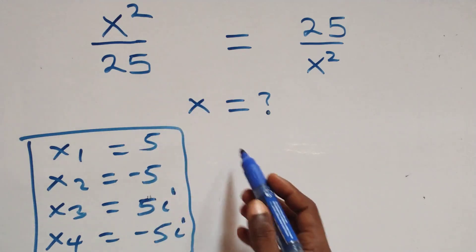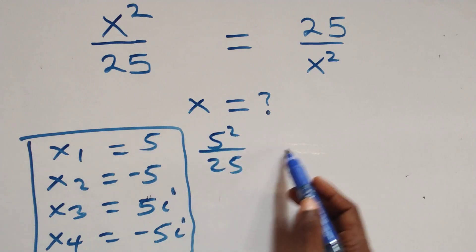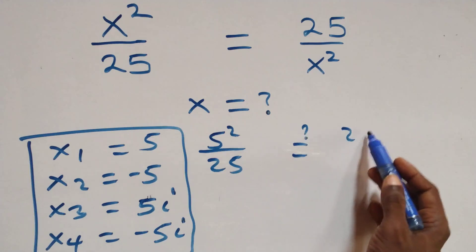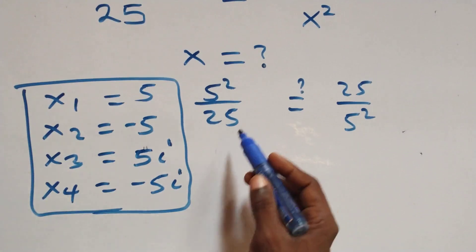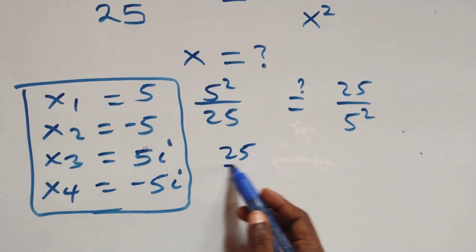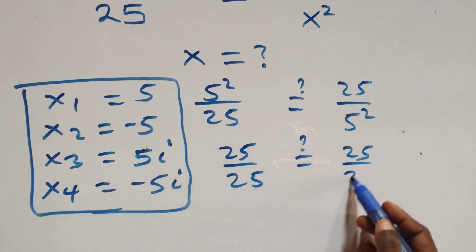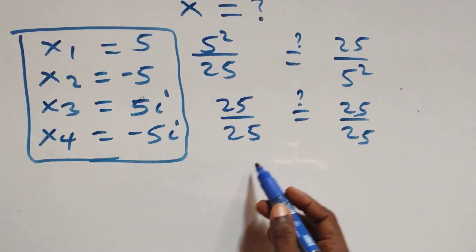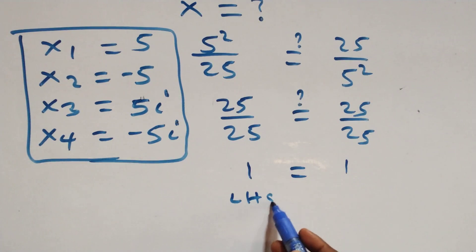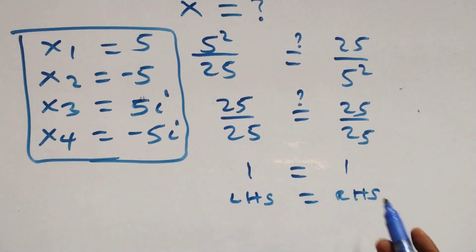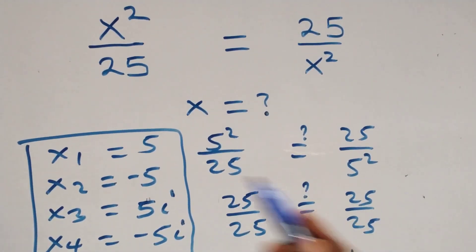Substituting x = 5: we get 5² over 25, which equals 25 over 5². That is 25/25 = 1, which equals 25/25 = 1. Left hand side equals right hand side, and therefore x = 5 satisfies the given problem.